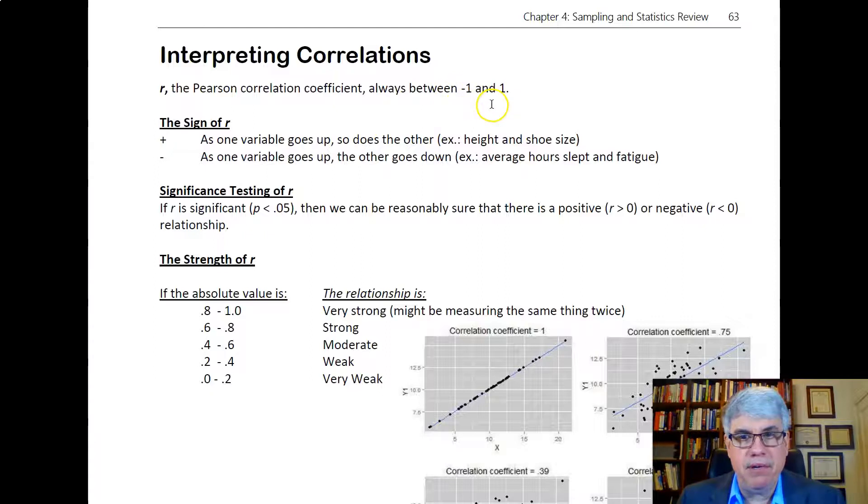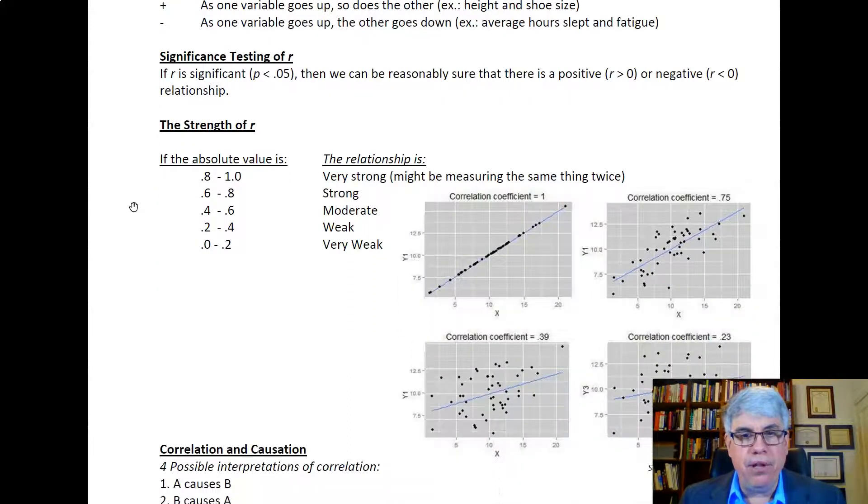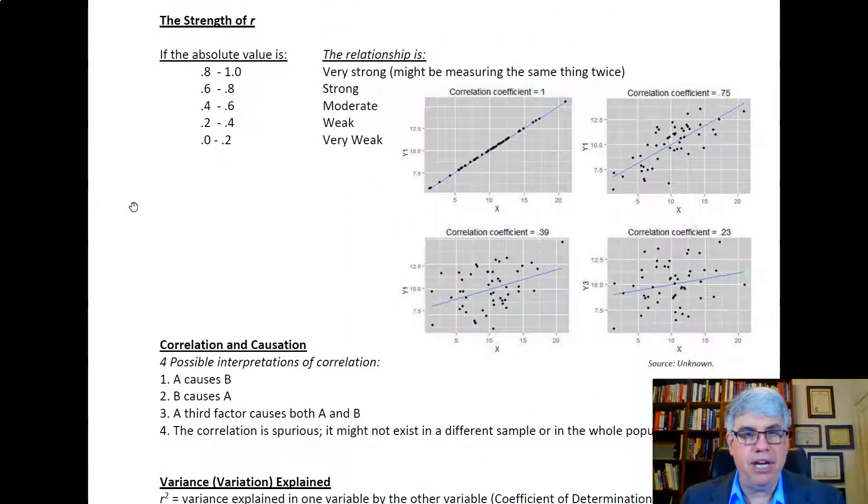The second part is the strength of r, and that's going to go between zero and one. We look at the absolute value of r. We drop the negative sign or positive sign, both of them, to see how strong it is.